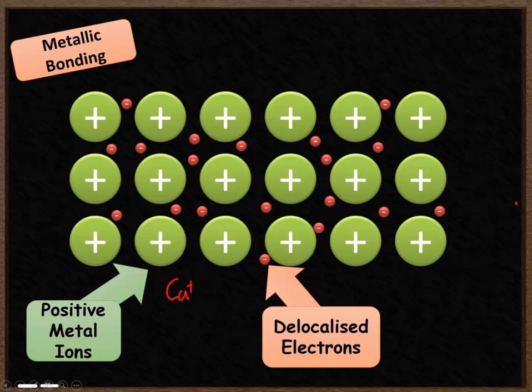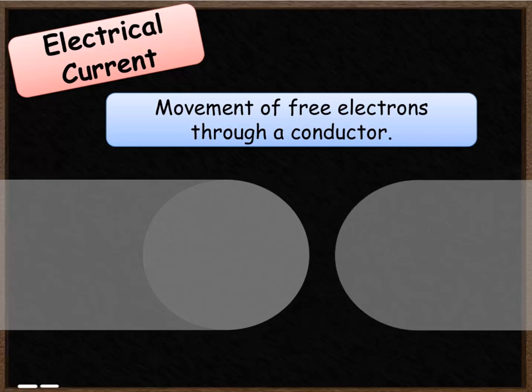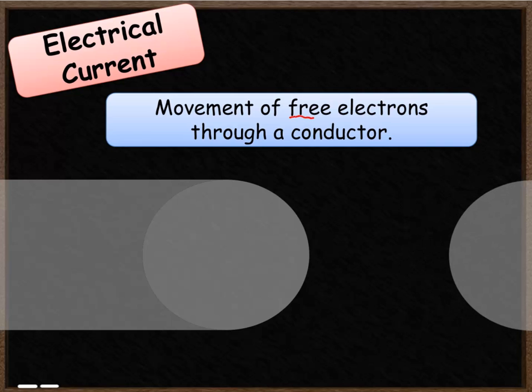As a result this material can conduct electricity. These electrons can move around, can flow. A flow of electrons is an electrical current. An electrical current is a movement or flow of these free electrons that are no longer attached to ions through a conductor.